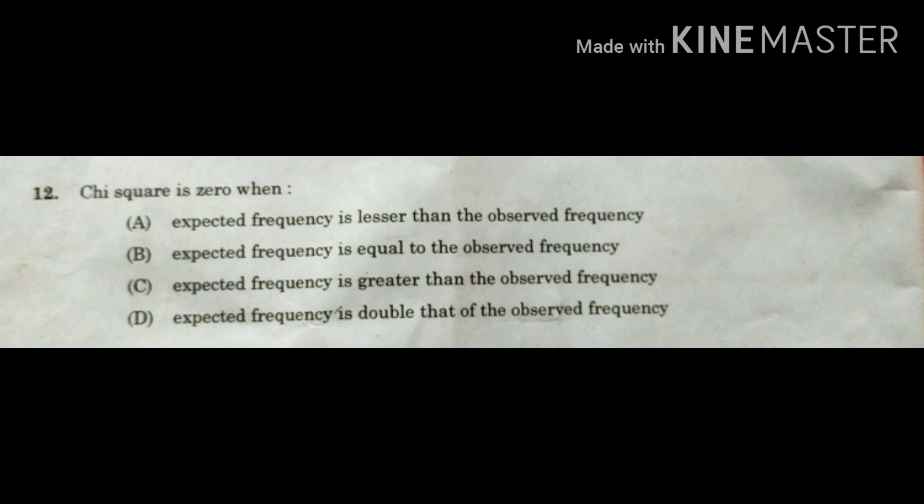Moving to the next question: the chi-square is zero when — option A: expected frequency is lesser than the observed frequency; option B: expected frequency is equal to the observed frequency; option C: expected frequency is greater than the observed frequency; option D: expected frequency is double that of the observed frequency.